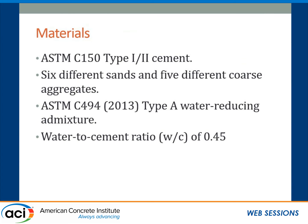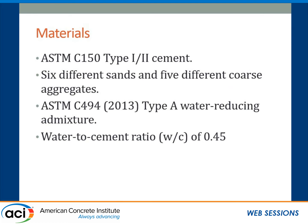These are the materials we used. We used ASTM-C150 Type 1 cement. We used six different sands and five different coarse aggregates. ASTM-C494 Type A water-reducing admixture was used, which is low range. The water-to-cement ratio was kept at 0.45 for all the concrete mixes. These two graphs show the gradation for coarse and fine aggregate — the left graph shows coarse aggregate gradation, and the right graph shows fine aggregate gradation.